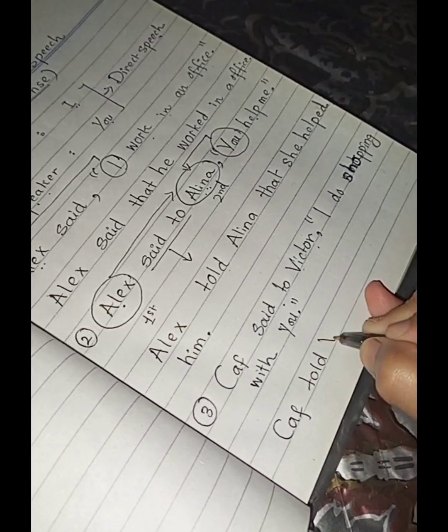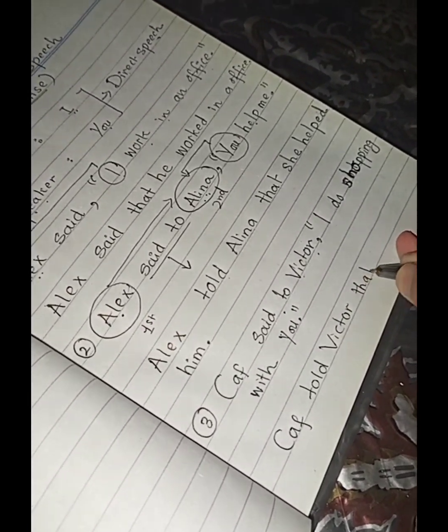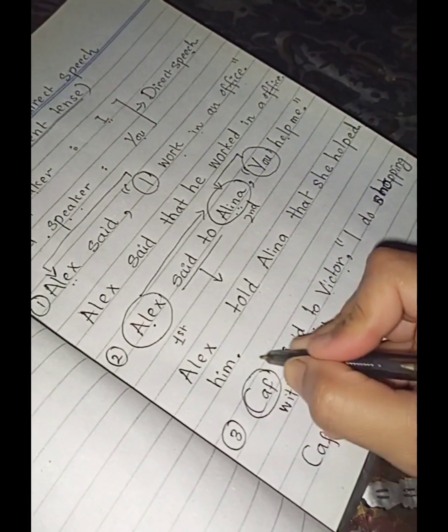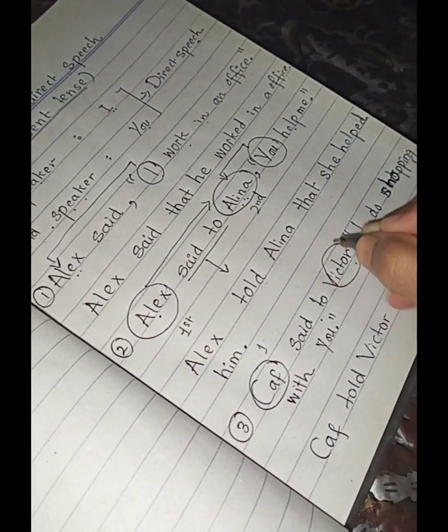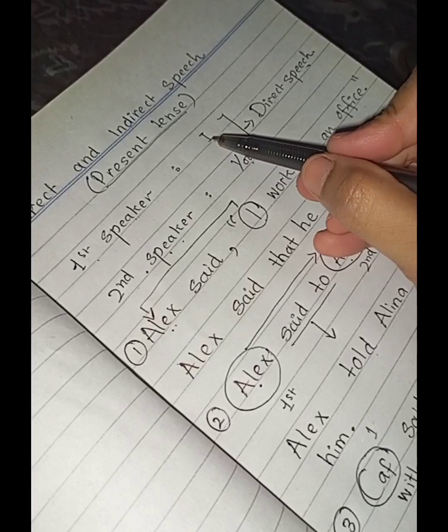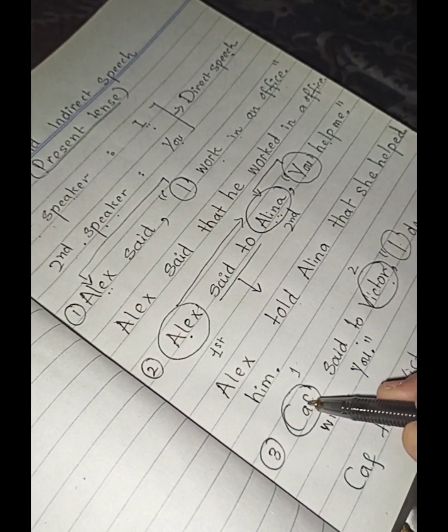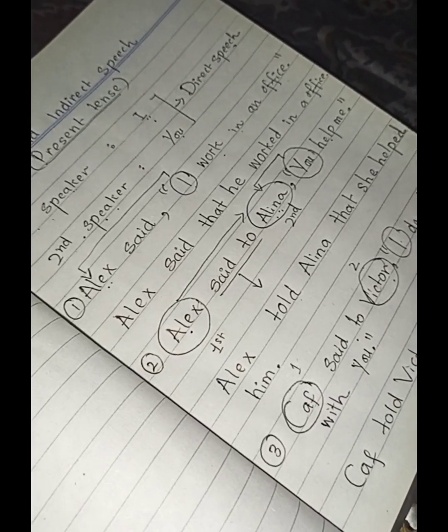Kev told Victor that. Now you see. This is the first speaker. This is the second speaker. And I... And here you check this rule. First speaker always contains I. So we know that I is for Kev. And Kev is a girl.